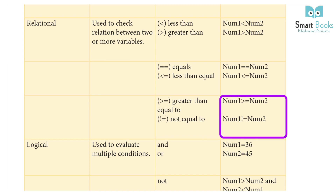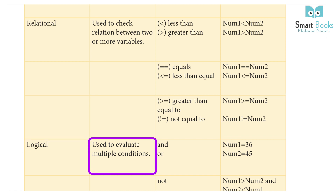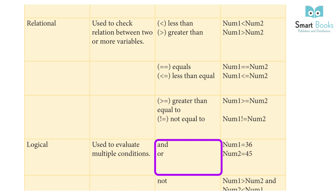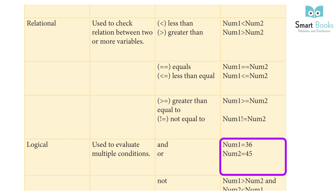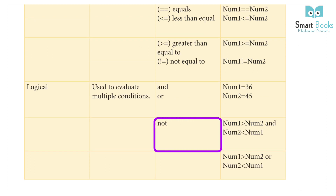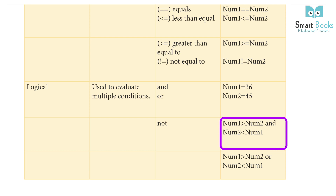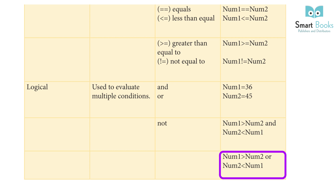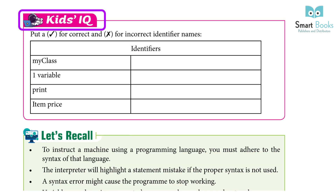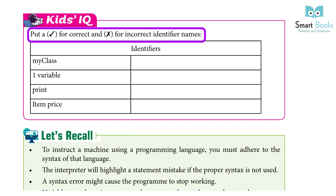Logical operators are used to evaluate multiple conditions — and, or. For example: number1 == 36, number2 == 45. Expressions like 'number1 > number2 and number2 < number1', or 'number1 > number2 or number2 < number1'. Activity: Put a tick for correct and a cross for incorrect identifier names.